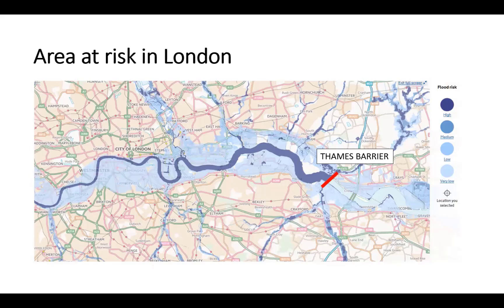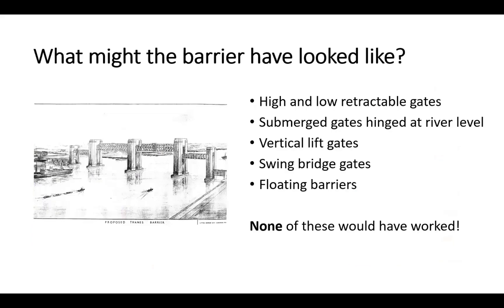Sir Herman Bondi, who was chief scientist in 1969, reckoned that actually if London had flooded it would have paralysed the city for at least six months. Now, what might the barrier have looked like? The Port of London thought they were the most important people around, so when they first started they said they wanted no permanent structures across the Thames at all — that turned out to be completely unrealistic.